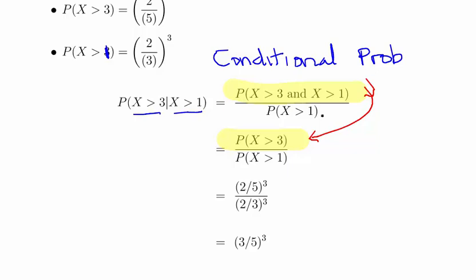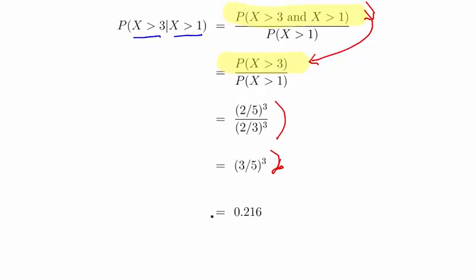We have (2/5)^3 divided by (2/3)^3. Working that out, you can see this equals (3/5)^3, which gives an answer of 0.216. That completes the question — a conditional probability problem related to continuous random variables.